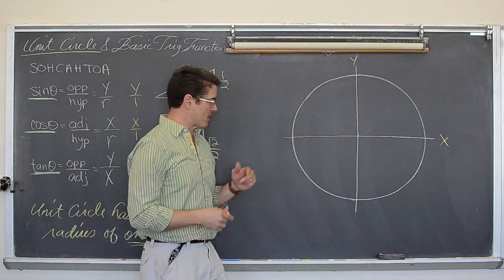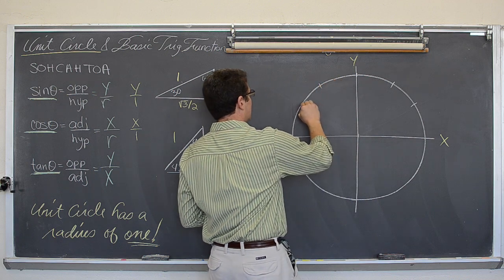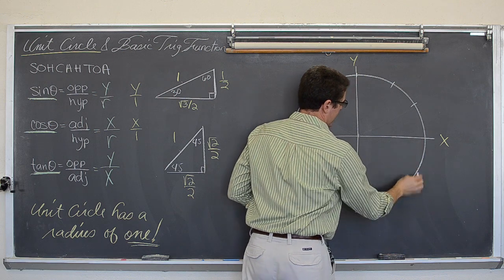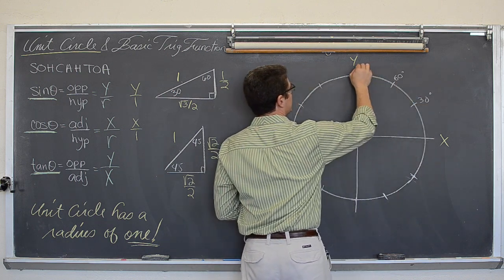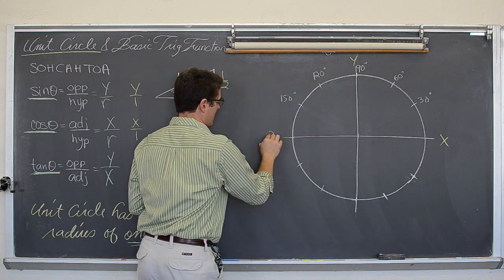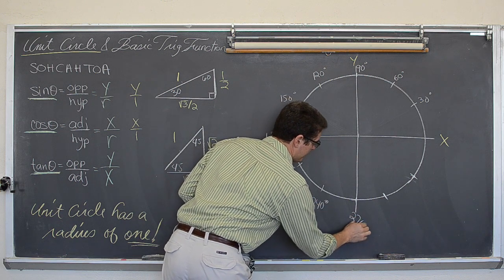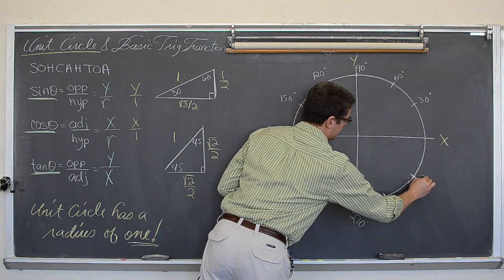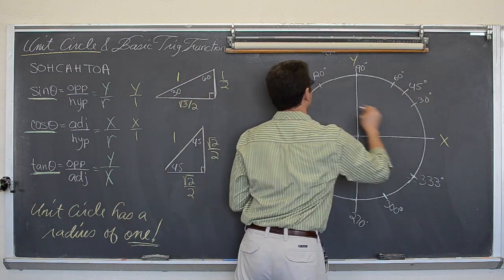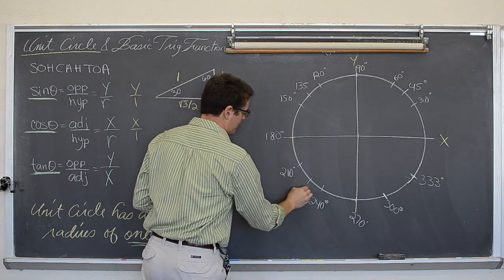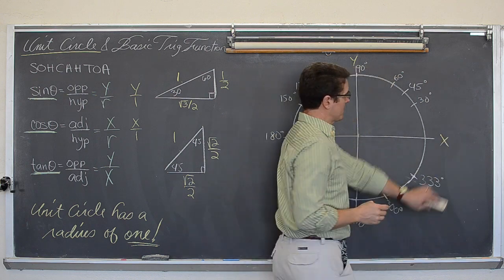Now there are 16 angles around a unit circle. You count by 30 to get 12 of the 16 angles: 30 degrees, 60 degrees, 90 degrees, 120, 150, 180, 210, 240, 270, 300, and 330 degrees. Then for the other four angles you count by 45: 45, 135, 225, 270, 315, and then finally 0 or 360 degrees.